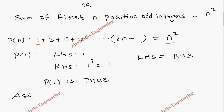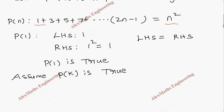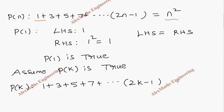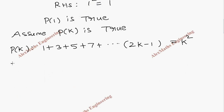When P of 1 is true, as a next step we have to assume P of k is true. So we write the expression P of k: 1 plus 3 plus 5 plus 7 plus dot dot dot 2k minus 1, which is equal to k squared.